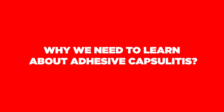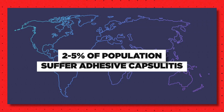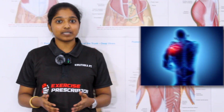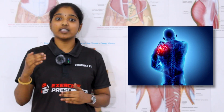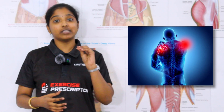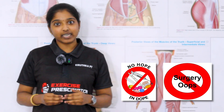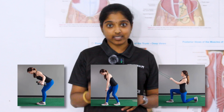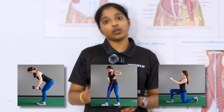We need to learn about Adhesive Capsulitis because it has a high prevalence rate — two to five percent of the general population are affected. Women are more prone than men due to menopause and hormonal imbalances, and the commonly affected age group is 40 to 60 years. Importantly, 17% of people who have Adhesive Capsulitis in one shoulder have a high chance of developing it in the contralateral shoulder within five years. Therefore, temporary pain management or surgical management alone is not enough — proper physical therapy rehabilitation is essential as a permanent solution and to prevent recurrence.